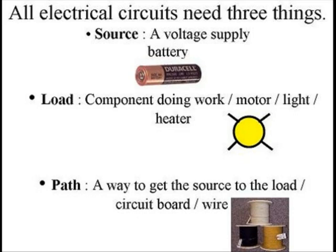A source is a voltage supply, or energy. A load is something that's doing work for you. This can be a motor, a light, or a heater, for example. And a path is a way to get the source to the load and back to the source again.